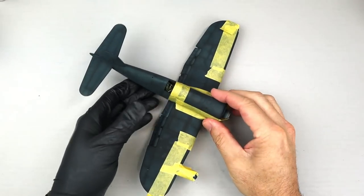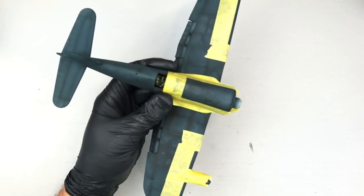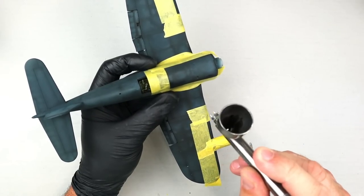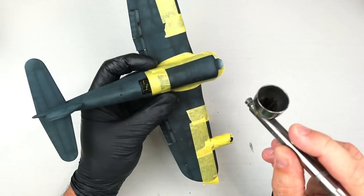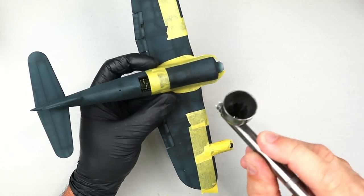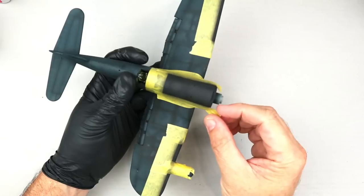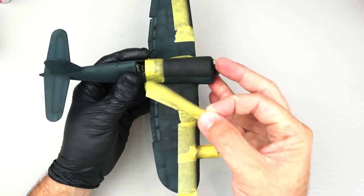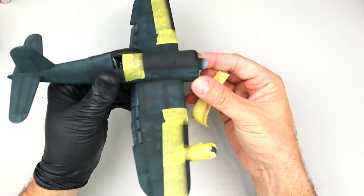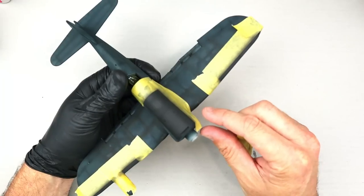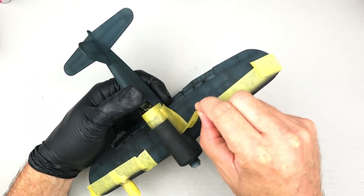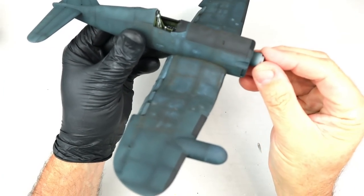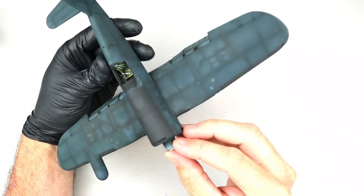To paint the anti-glare panel and leading edge de-icer boots, I taped off those areas with Tamiya low tack masking tape and airbrush those sections with Tamiya flat black. After the black was down, the tape was removed to reveal the subtle but obvious contrast between the blue and the black. You can see the weathering effects from those raw umber, cobalt blue, and light blue filters.